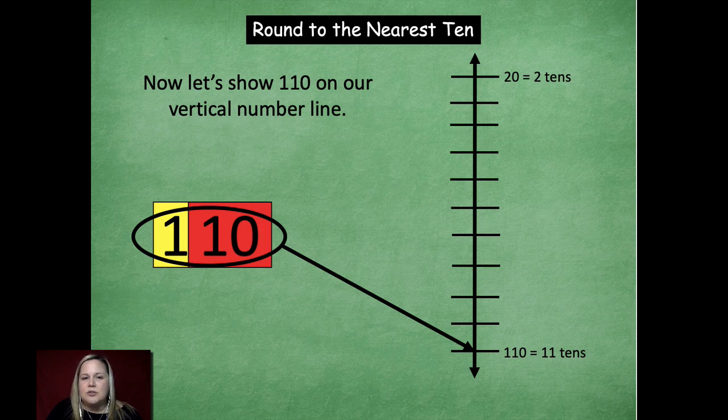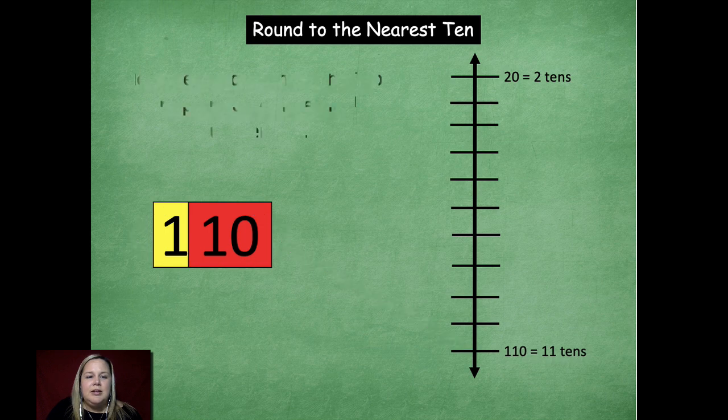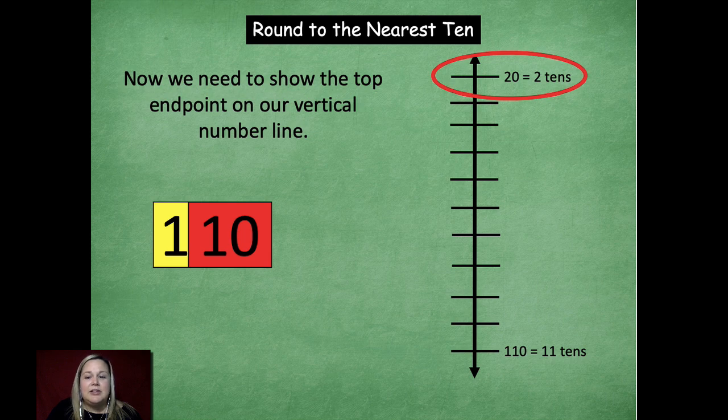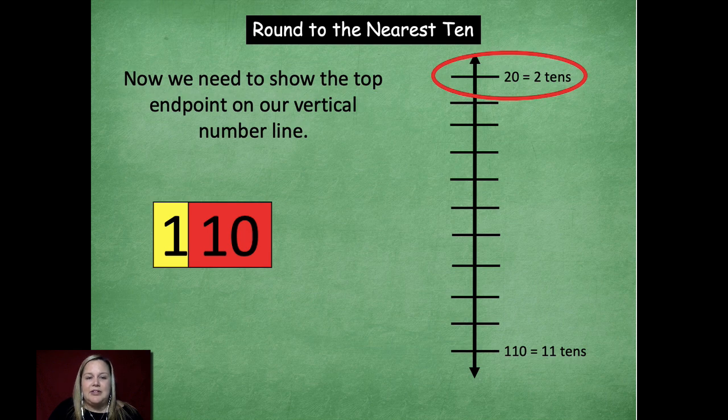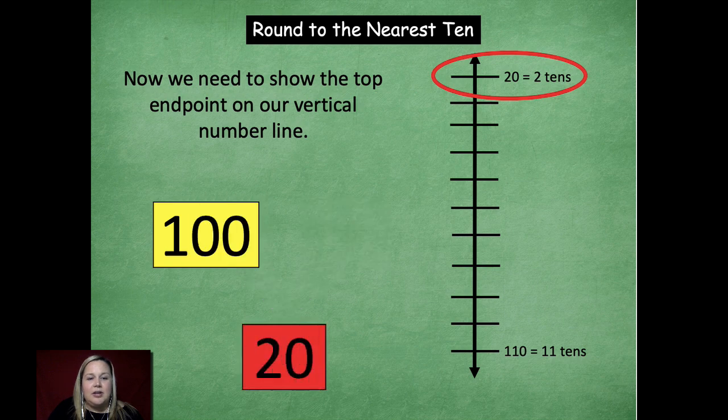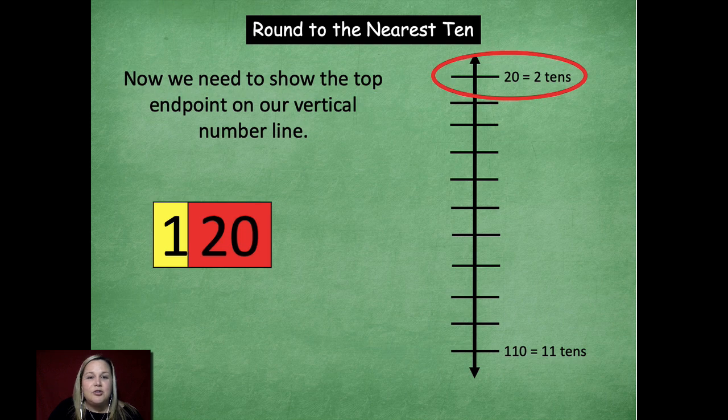Okay, this is a little tricky as we go through. Now I'm going to show the top endpoint. So we were at two tens before. Now our start point on our number line is eleven tens. So we're going up one ten more, which then turns into twenty, which is one hundred twenty.